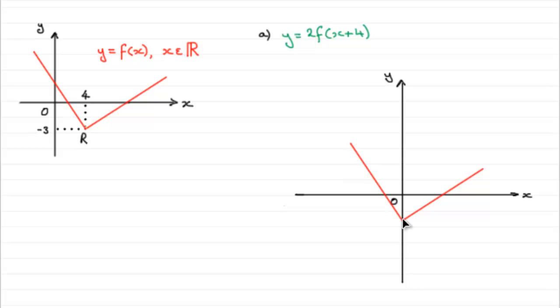If we just mark that point in here as minus 3 we've got our new graph here of just f of x plus 4.